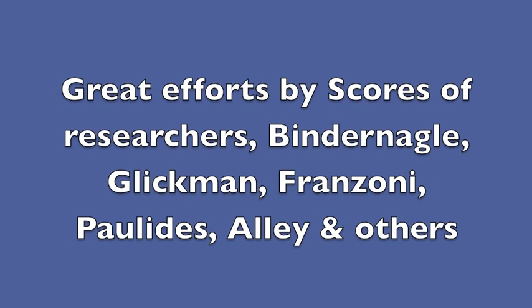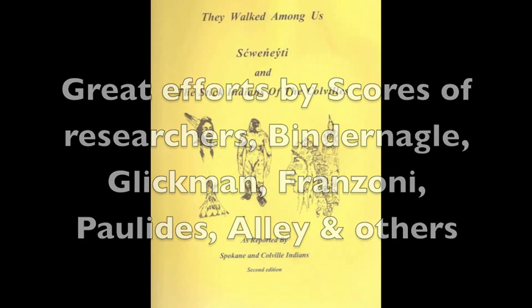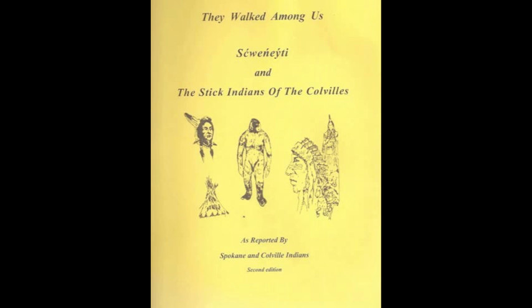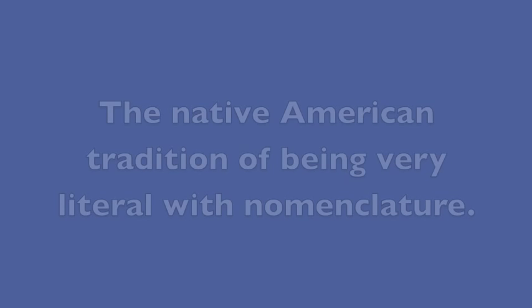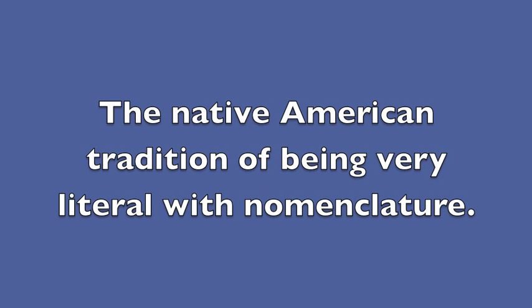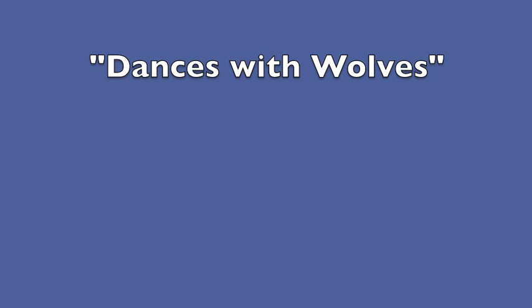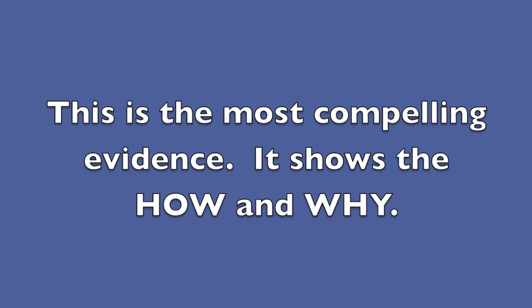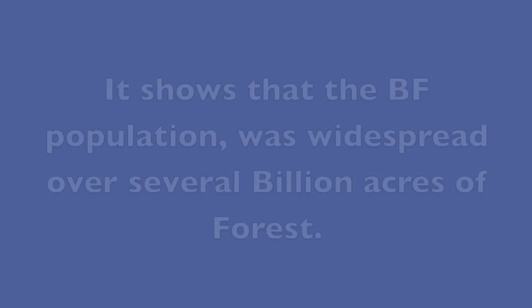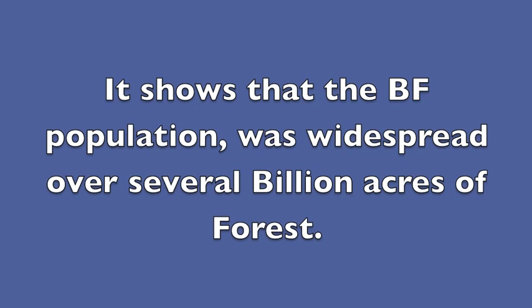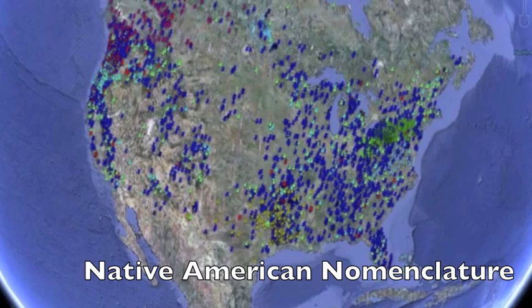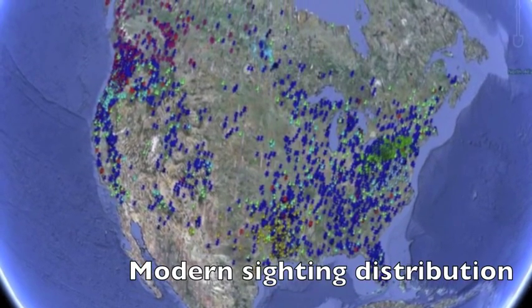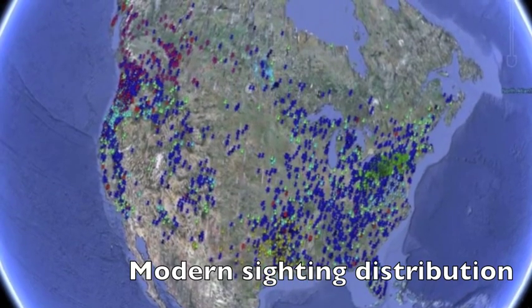The names are very accurate. Great efforts have been done by many researchers. We're going to go through the Native American tradition of being very literal with their nomenclature, like 'Dances with Wolves' — that's literal, it describes what it is. This is compelling evidence showing how and why, and that the population was widespread over several billion acres of forest. Here's the basic distribution of American Indians and the modern sighting distribution of Sasquatch.